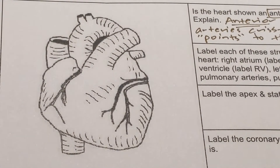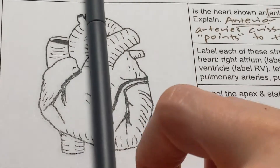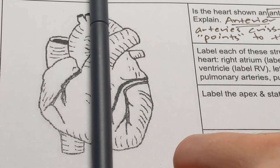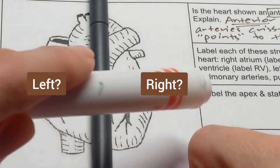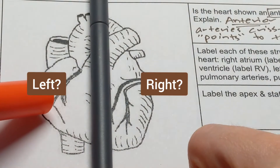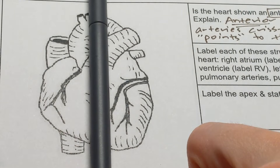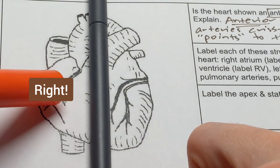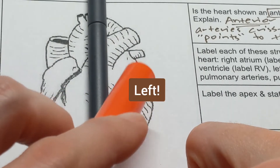Now we have some different structures to label, and before we label them it's important to know which side of the heart is which. The heart has two sides, split kind of right down the middle — a left and a right. When people first look at this diagram they're tempted to say this is the left and this is the right, based on what they see in front of them. But imagine this heart was inside a person facing you — their left is your right, and vice versa. So this is actually the right side of the heart on your left, and the left side of their heart is on your right.